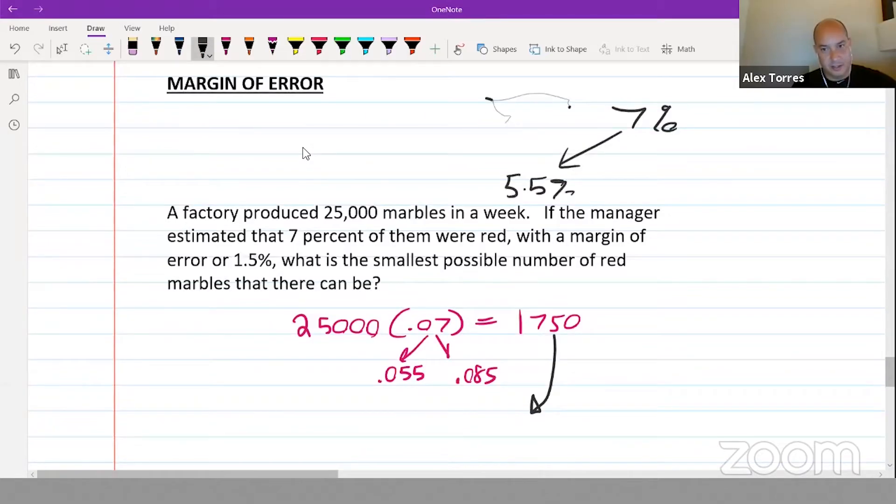And it can be taken up by 1.5% because that's the margin of error. It says we're not sure that it's exactly 7%, it could be off by up to 1.5%. So what's 5.5% of 25,000? That's 25,000 times 0.055, which is 1,375, and that'll be our answer.